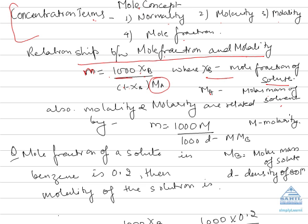Also, molality and molarity are related by the formula: m equals 1000 times capital M over 1000 times d minus M times Mb. M is the molarity, Mb is the molar mass of the solute, and d is the density of solution.